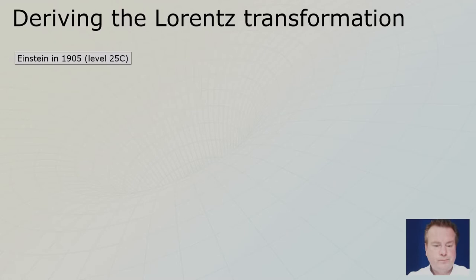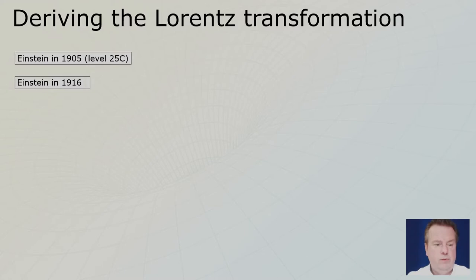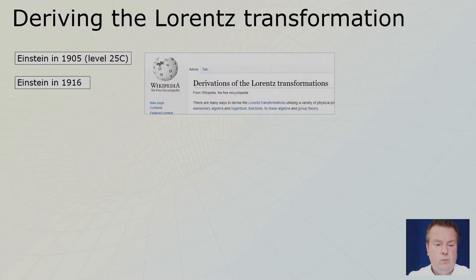Before we go into deriving the Lorentz transformation, Einstein of course did it — Lorentz did too, along with many others, as I talked about extensively in level 19. We saw about 50 to 60 years of mathematicians trying to get there, and then Lorentz and Poincaré made it to the finish. Einstein did it again in 1905, a little bit differently, and we will talk about this in level 25, where we do the actual derivation — that will be rock climbing, it's really difficult. He also did it in 1916.